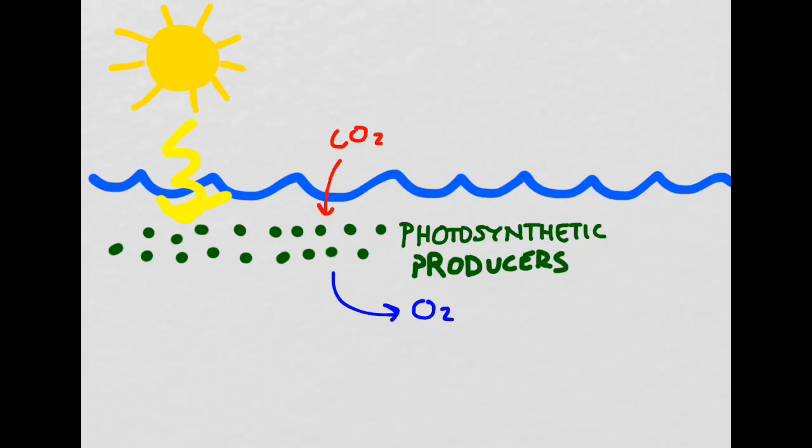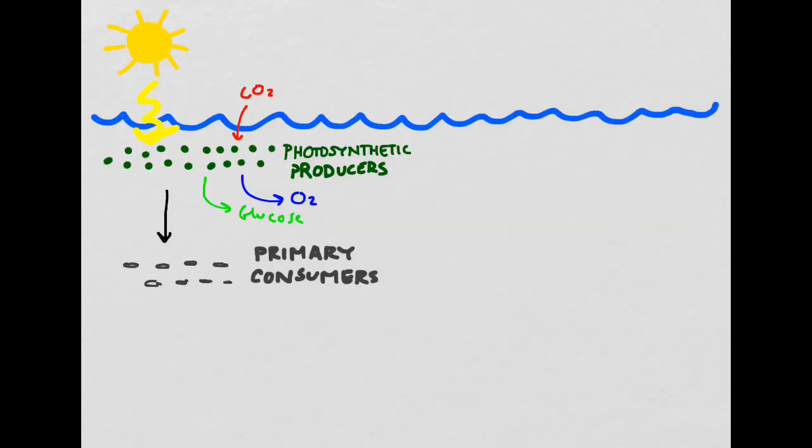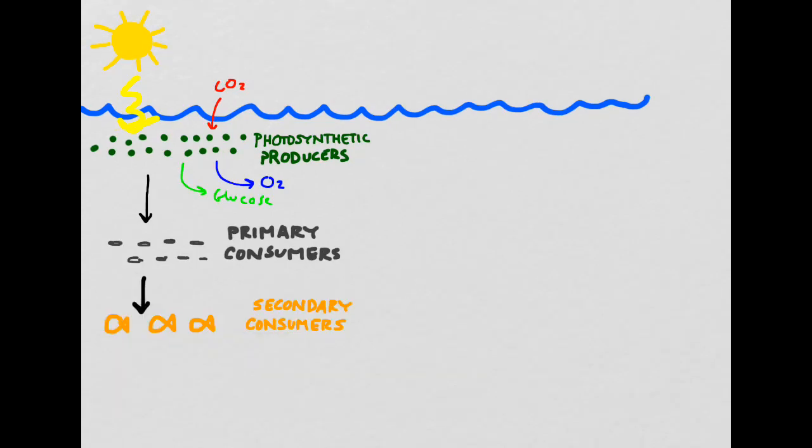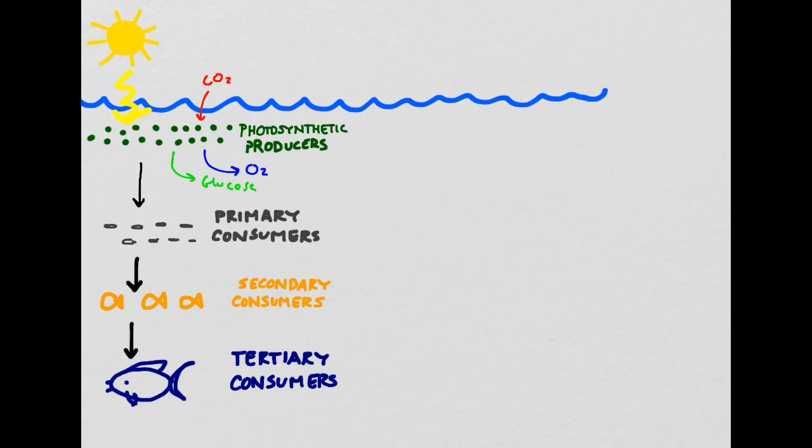These photosynthetic producers take light from the sun, and they also take in carbon dioxide. They use the process of photosynthesis to produce oxygen and also to produce sugars in the form of glucose. The energy then flows down the food chain into the primary consumers, then the energy goes on to the secondary consumers. The energy can then move on from the secondary consumers to the tertiary consumers.